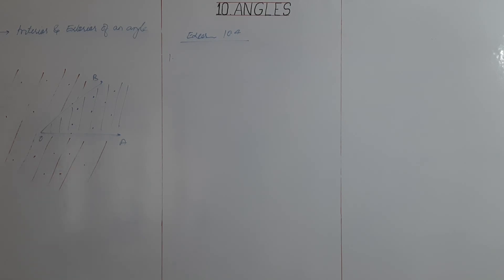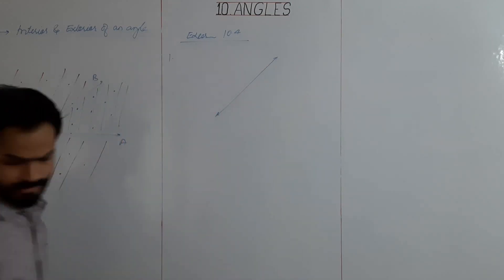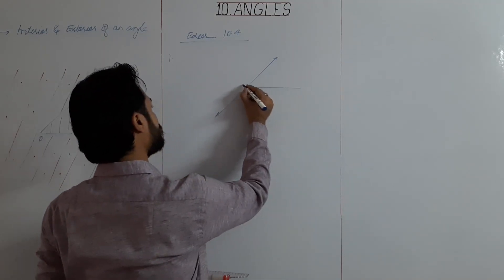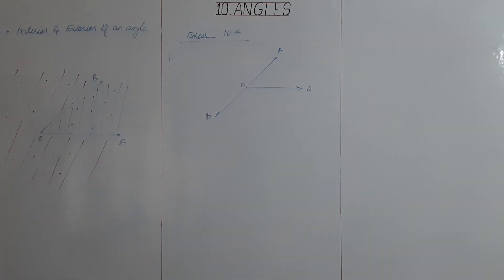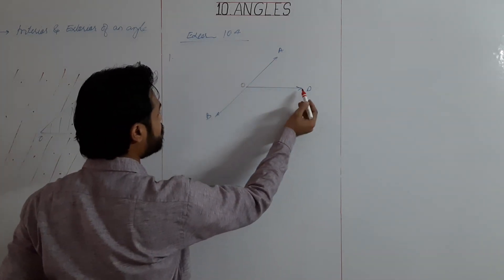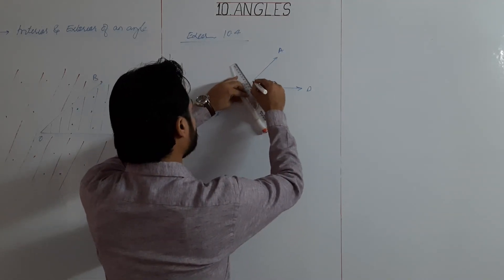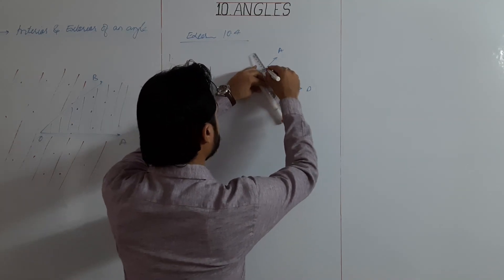Shade the interior of angle AOD in red. So drawing the angle first. The interior of angle AOD is this region — AOD. We have to shade this part in red.